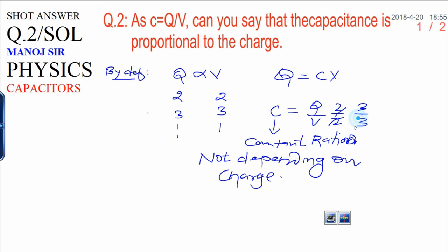The 2s will cancel out. If you increase by thrice, they will automatically cancel out, and finally you will get the constant ratio. That's why capacitance is not proportional to the charge.